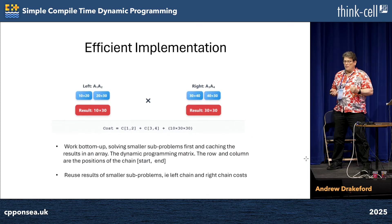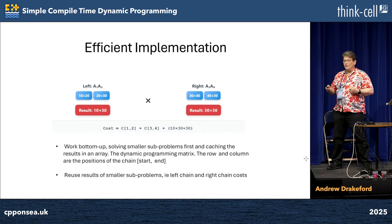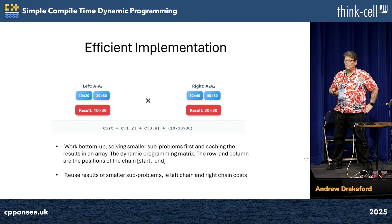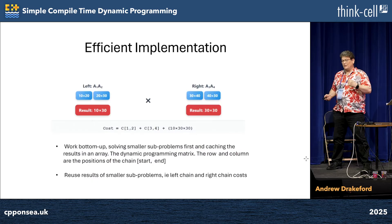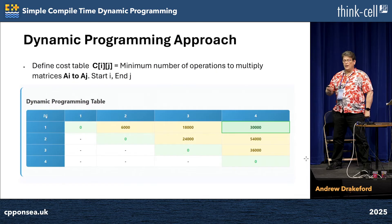We can efficiently implement this by working in a bottom-up way, solving smaller sub-problems first, and caching the results in an array called the dynamic programming matrix, where the rows and columns are the position of the start and the end of the chain that we're calculating. We reuse the results of the small sub-problems to calculate the cost of the larger chains. This is an example of the DP matrix: rows, columns, start point, end point.